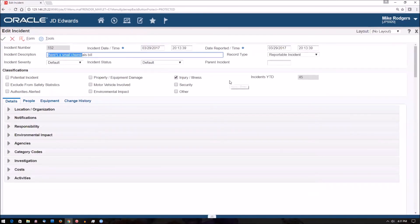Alright. Let's change this from there's a small chemicals bill to there's a small chemical spill. We can go ahead and mark it as low severity. In here we have injury illness checked. That's all that we need for that.